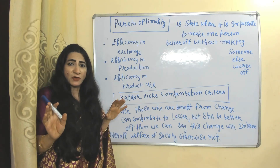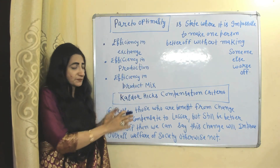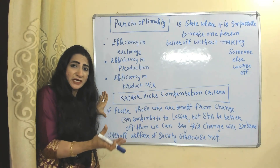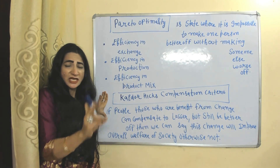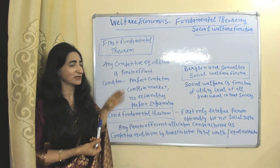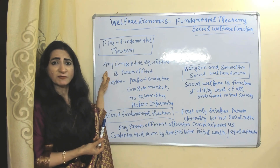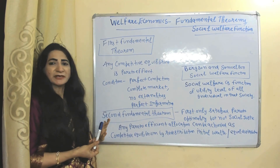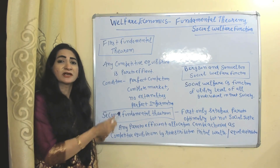The Kaldor-Hicks compensation criterion states: suppose a change benefits one person but causes another person a loss. According to this criterion, if those who receive a benefit from the change can compensate the loser some amount of money and still be better off, then the change improves the overall welfare of society — otherwise it does not. The first fundamental theorem of welfare economics states that any competitive equilibrium is Pareto efficient, but focuses only on Pareto efficiency without providing a framework for social justice. The second fundamental theorem, along with Pareto efficiency, also provides a framework for social justice by focusing on redistribution of wealth.